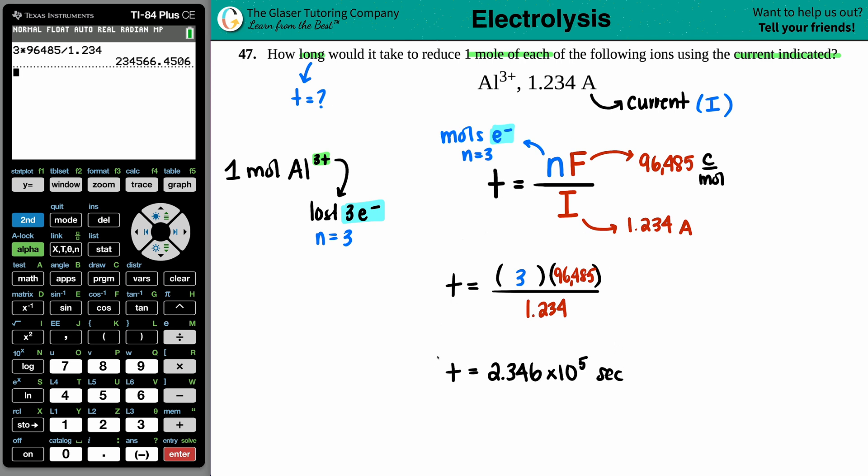Now, technically, they did not state that they wanted minutes or hours. But if you need to convert that in your question, go for it. In order to convert seconds to minutes, you would divide by 60 to get your minutes. And then if you needed hours, you just divide by 60 again. But I'm just going to keep it in seconds here because they didn't say.